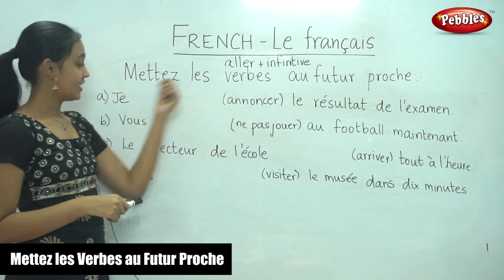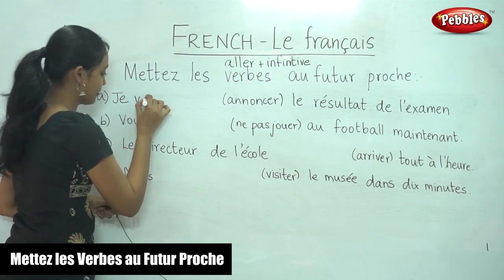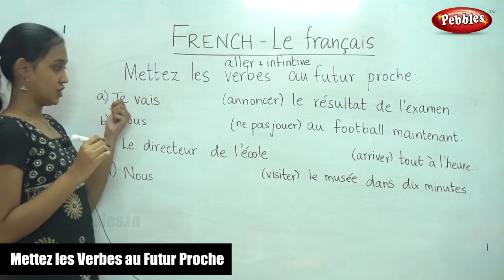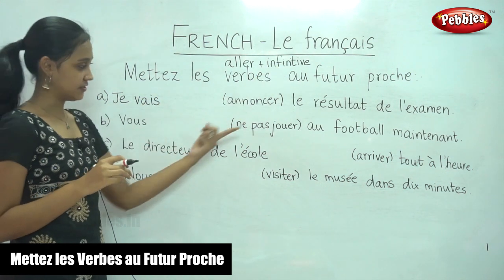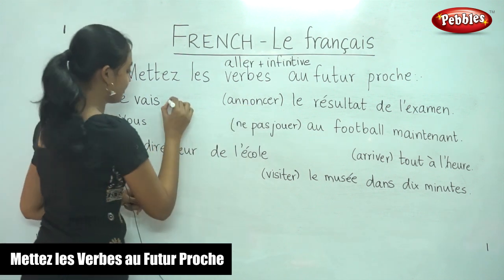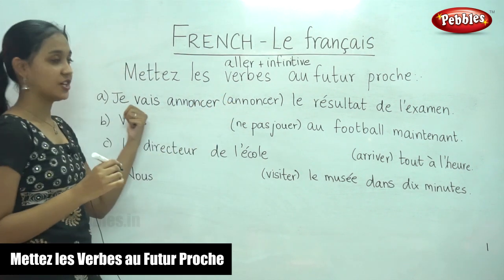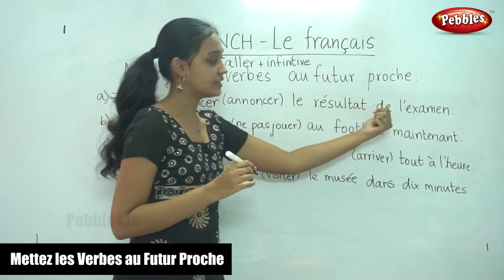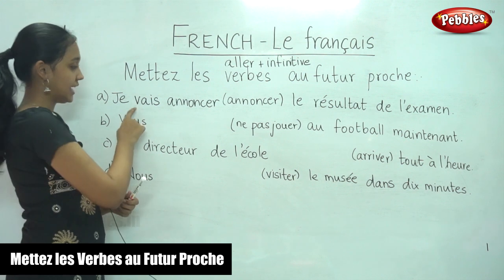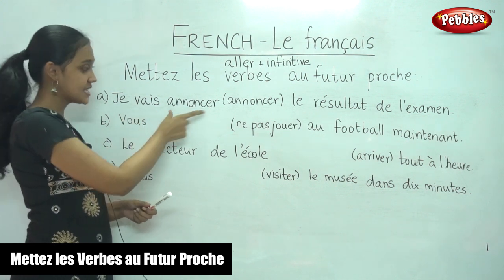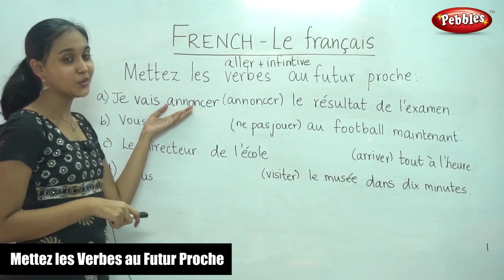What is the aller conjugation for je? It is vais. Je vais, and the next step is the infinitive — in this case, the infinitive is given in the bracket. Je vais annoncer le résultat de l'examen. We wrote the aller conjugation in the present tense followed by the infinitive. Very simple.